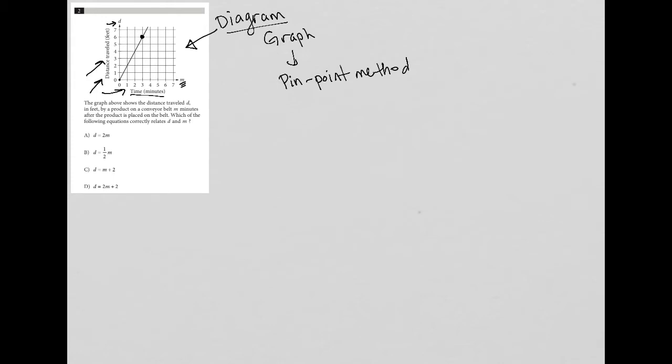And that point is telling me that if you have three minutes, so if M is equal to three, then D is equal to six. So at three minutes, we have a distance traveled of six feet. So that's the information that I gather from using the pinpoint method.